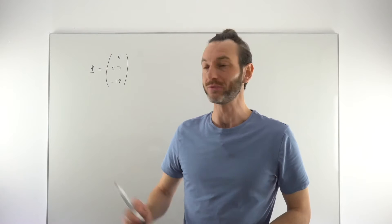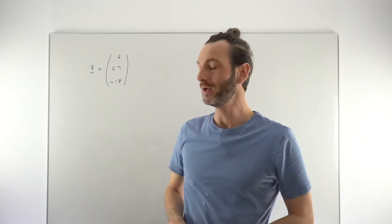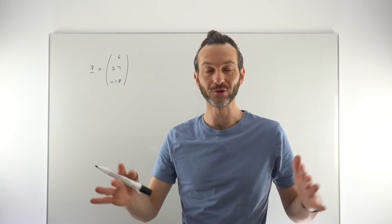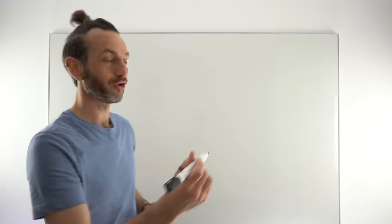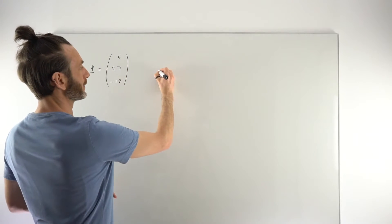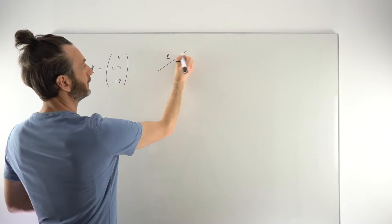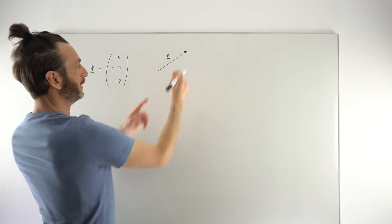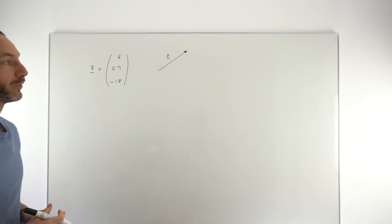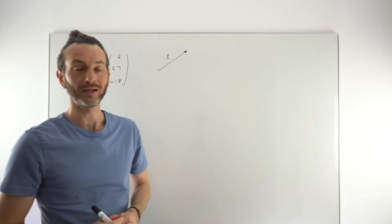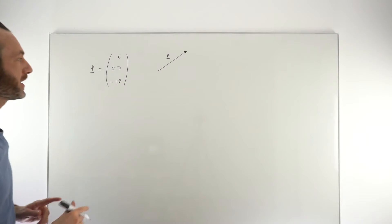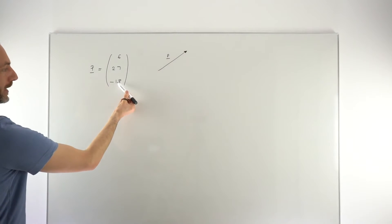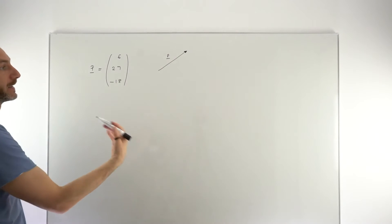In this question we've been given vector p written in component form and we're asked to find its magnitude. The magnitude is just the size or length of a vector — if you draw a vector as a line segment, the magnitude is the length of that line segment. There's no formula on the formula sheet for magnitude; you need to commit it to memory. It says the magnitude is each of the components squared, added together, and then square rooted.